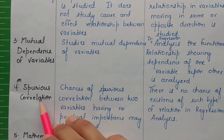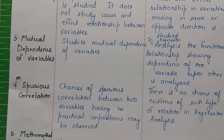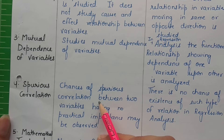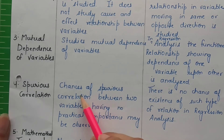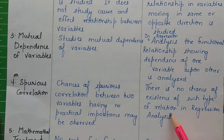Now regarding spurious correlation: in correlation, for example, if we take rainfall and exam marks or performance in exams, we can calculate correlation between these two columns x and y — rainfall in mm and student marks. A correlation figure will come out, but is this sensible? Does it have any practical importance? No. These two are not related, yet a figure will be forcefully calculated, and we will reach a fake conclusion that more rain means better marks. So there are chances of spurious correlation between two variables having no practical importance.